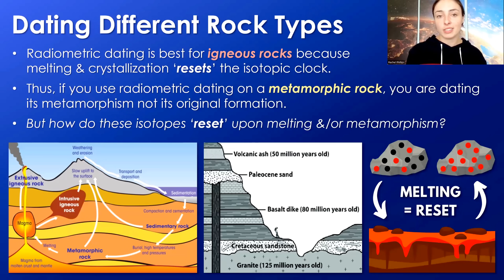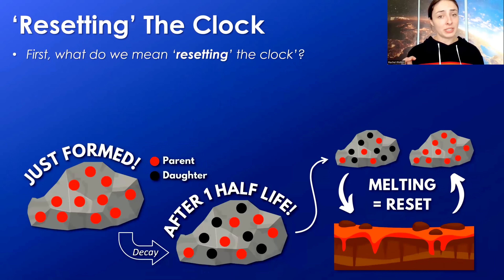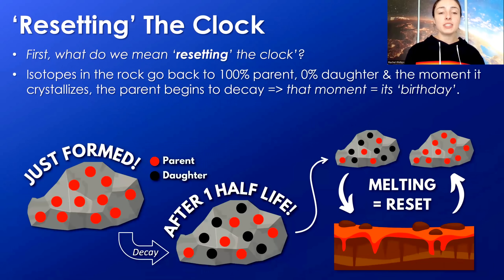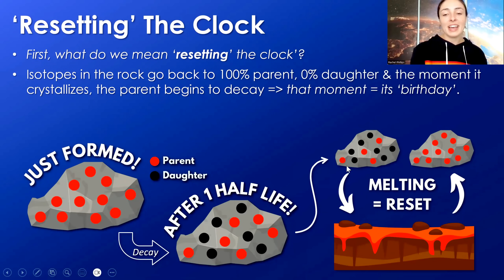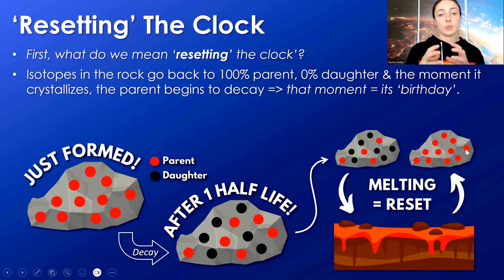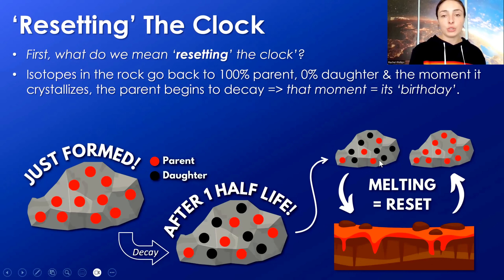This brings us to the whole concept of this video: how do these isotopes reset upon melting and/or metamorphism? Resetting the clock means bringing the rock back to a composition of 100% parent isotope and no daughter isotope. In this rock diagram example, all the isotopes are the parent, and there are no daughter isotopes — even though they began to form, it melted and brought it back to purely parent isotope. Then once it re-crystallizes with this composition, that begins the decay of the parent back into the daughter isotope.